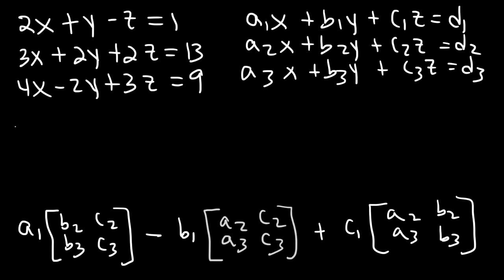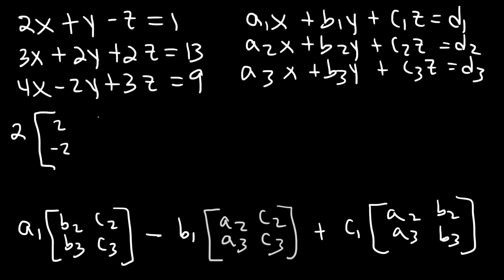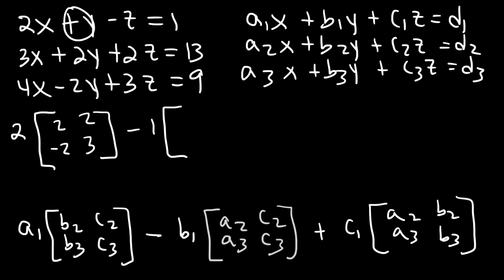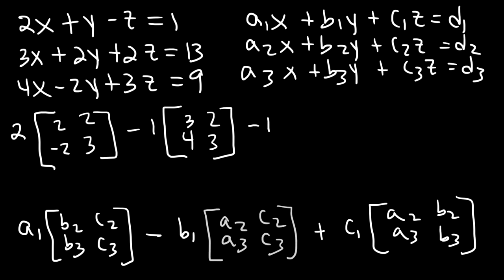So in this example, a1 is 2, b2 is 2, b3 is negative 2, c2 is 2, and c3 is 3. And then minus b1, which is 1 — it's the coefficient in front of y. Then a2 is 3, a3 is 4, c2 is 2, and c3 is 3. And then plus c1, which is negative 1 — that's in front of z. Then a2 is 3, a3 is 4, b2 is 2, b3 is negative 2.